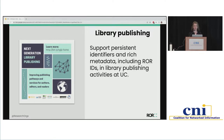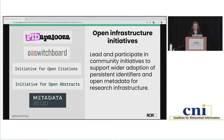A third area of our strategy for incorporating open identifiers is to support persistent identifiers and rich metadata as part of the best practices we're implementing for library publishing at CDL. We think it's really important that we are following best practices for opening up not just the outputs of those publishing activities, but also the core metadata about those publications. Lastly, we're involved more community-wide with initiatives and groups working collectively to open up our infrastructure, including the Pitapalooza festival of open persistent identifiers, the Open Access Switchboard project, the Initiative for Open Citations, the Initiative for Open Abstracts, and Metadata 2020, just to name a few.